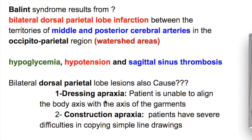Bilateral dorsal parietal lobe lesions also cause: number one, dressing apraxia — the patient is unable to align the body axis with the axis of the garments; and number two, construction apraxia — patients have severe difficulties in copying simple line drawings.